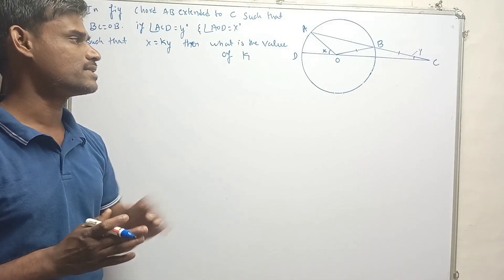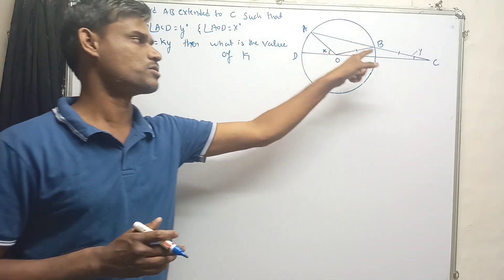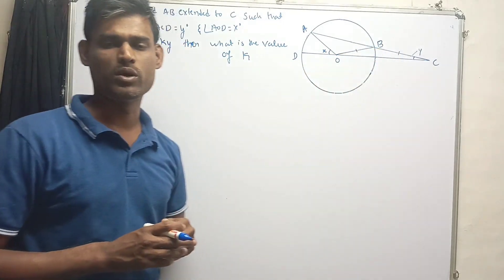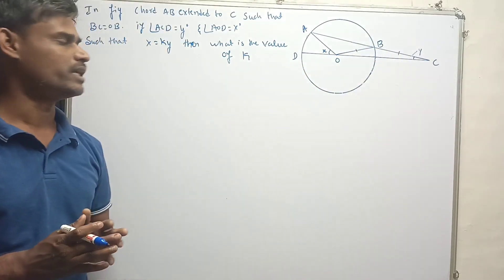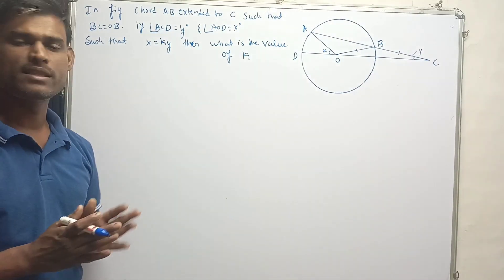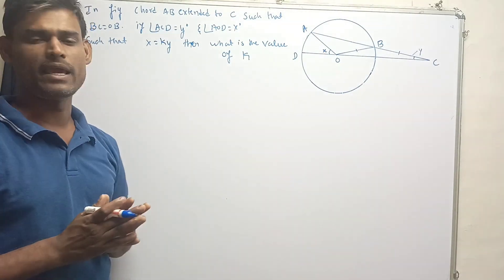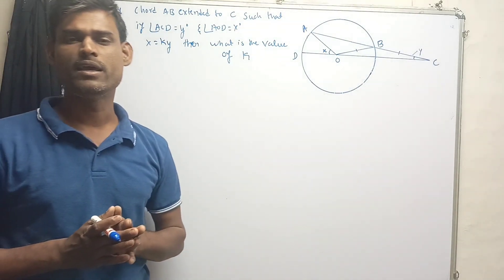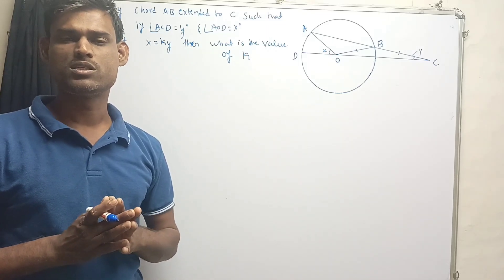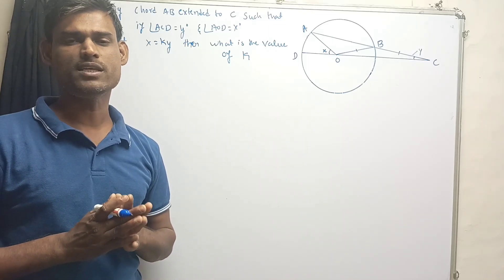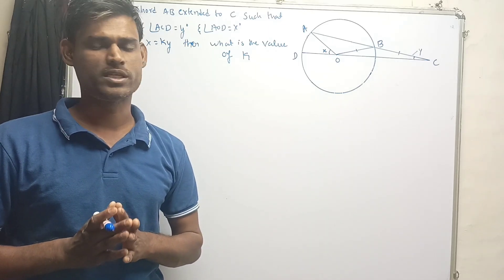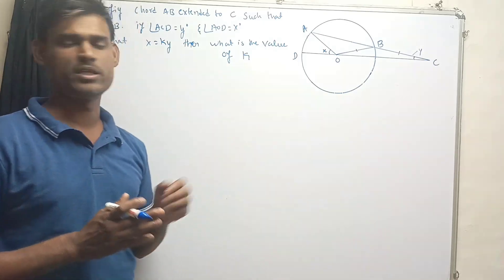This problem is completely based on two properties of triangles. Property number one: in an isosceles triangle, angles opposite to equal sides are equal to each other. The second property: in any triangle, an exterior angle is always equal to the sum of its two interior opposite angles.